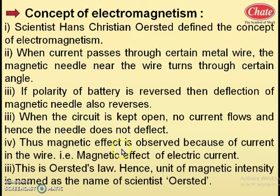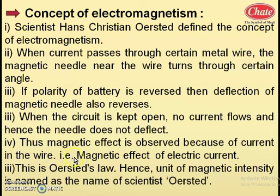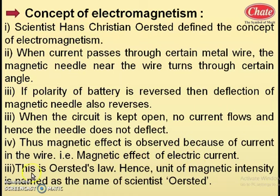Thus, magnetic effect is observed because of current in the wire. As long as the current flows, the magnetic needle deflects. If no current flows through the circuit, the magnetic needle does not deflect. This effect is called the magnetic effect of electric current, and we observe this magnetic field around the current-carrying conductor. That is called electromagnetism, and this is Oersted's law.